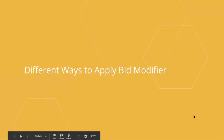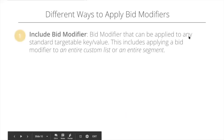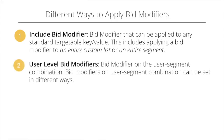There are four ways to apply bid modifiers. The first is the include bid modifier, applied on any standard targeting key — geos, operating systems, etc. It can also be applied to an entire custom list such as an app list, domain list, or any other custom list, or an entire segment.